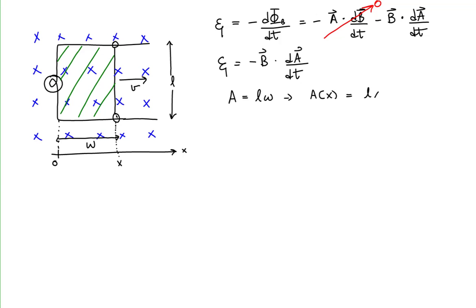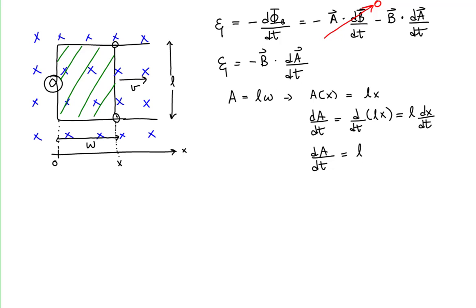So x gives us the width of the conducting loop, and we rewrite the area as A = L·x. The time rate of change of the area is then the rate of change of L times x. Since L is constant, this is L times dx/dt. In other words, dA/dt equals L times v, because velocity along the x-axis is the time rate of change of position x, which is the position of the sliding wire.